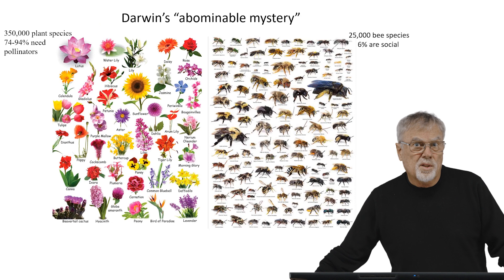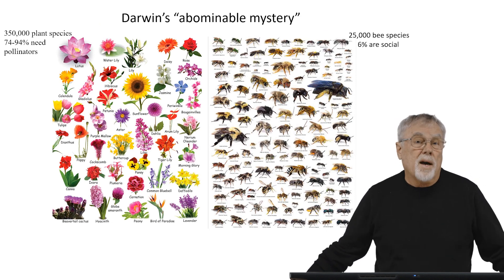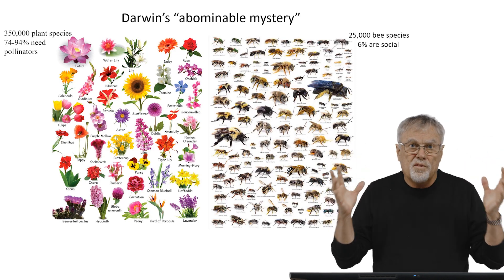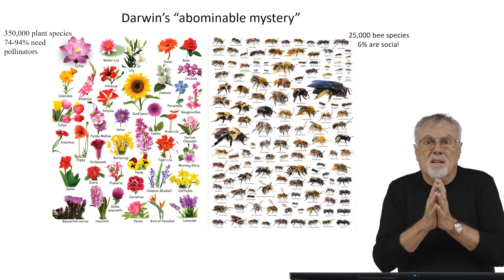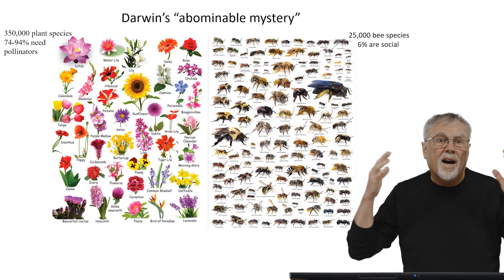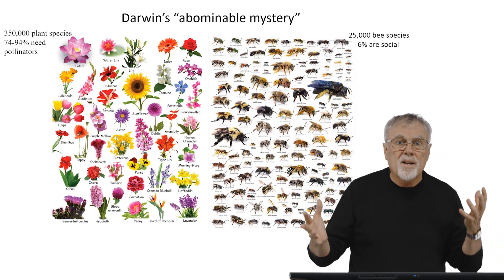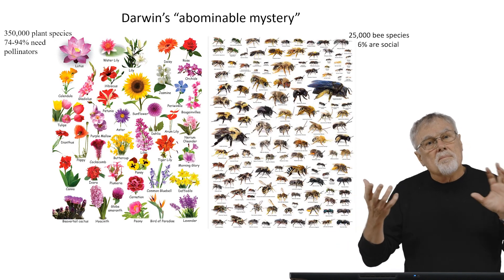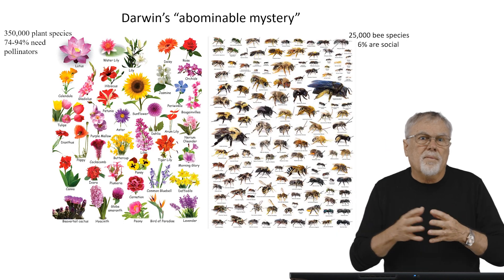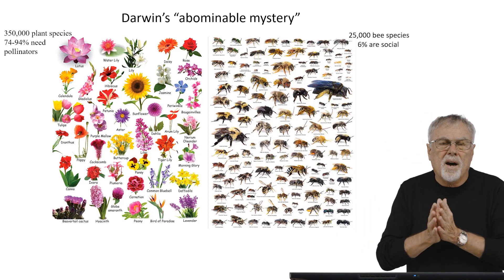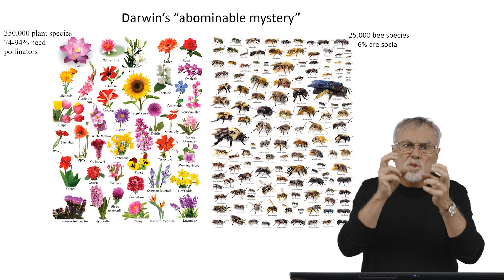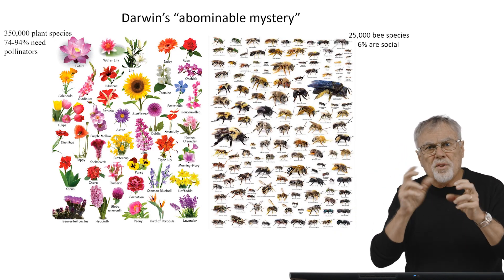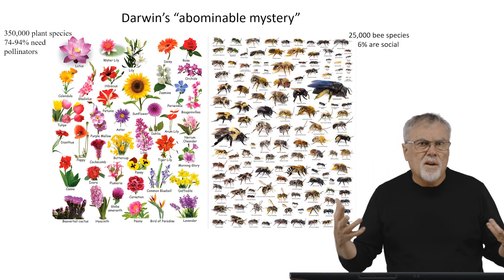This was Darwin's abominable mystery. He was just puzzled by the fact that all of these species could occur in a very short period of time. He wrote to his friends and said, 'I can't understand it. This can't be possible — this kind of rapid evolution.' But he resolved it to his own satisfaction by invoking the idea of co-evolution: the dance of the two, where bees and plants were very rapidly adapting to each other, which could accelerate the whole process of evolution.